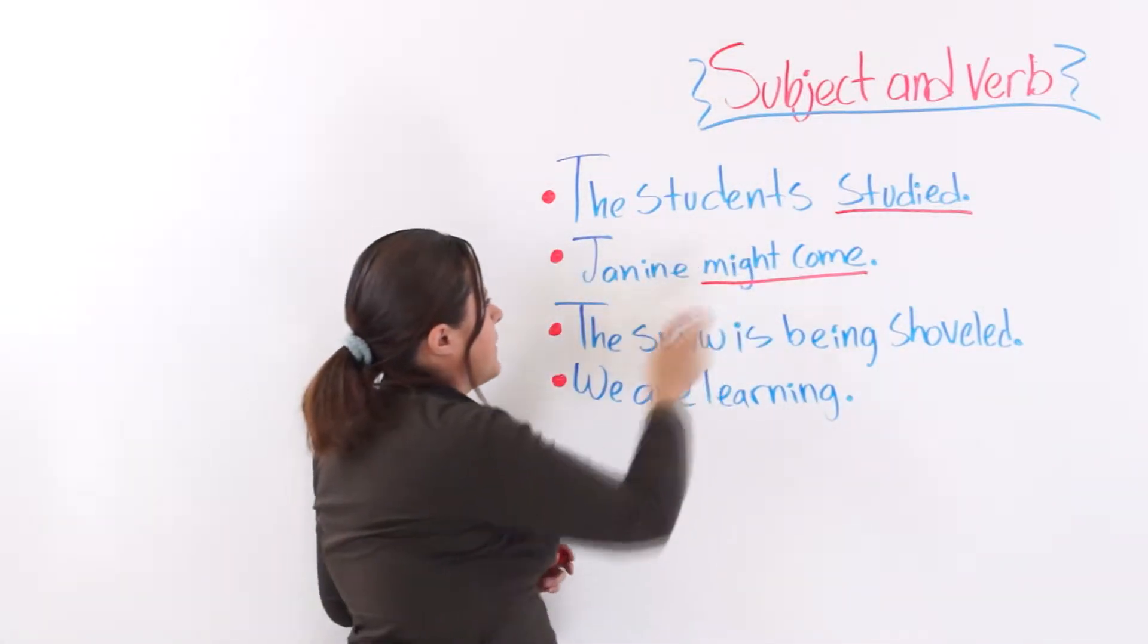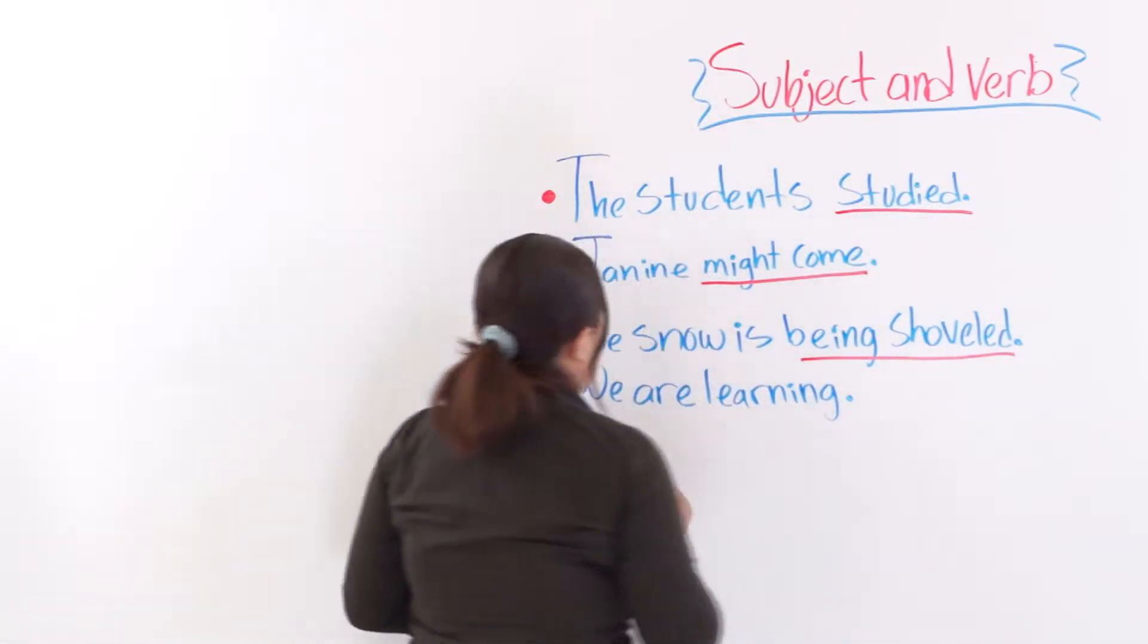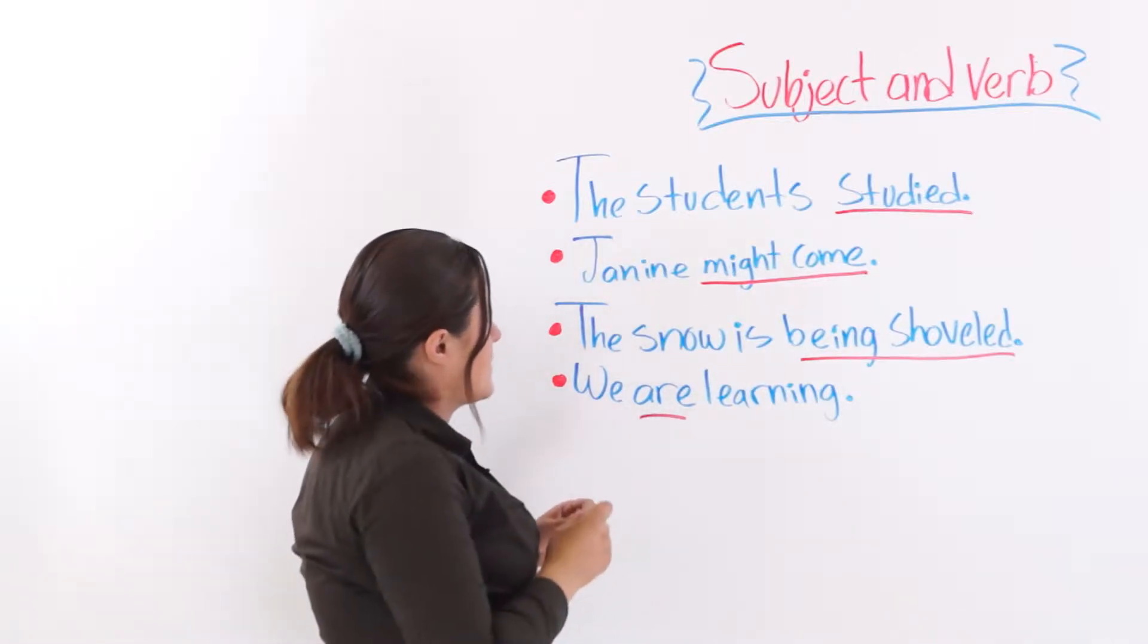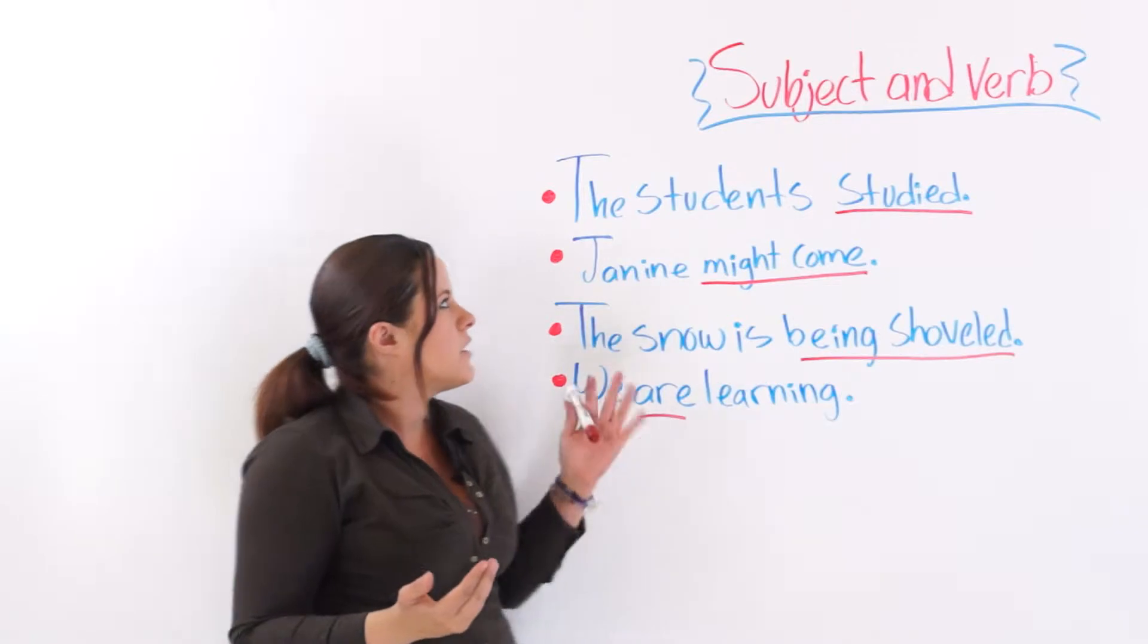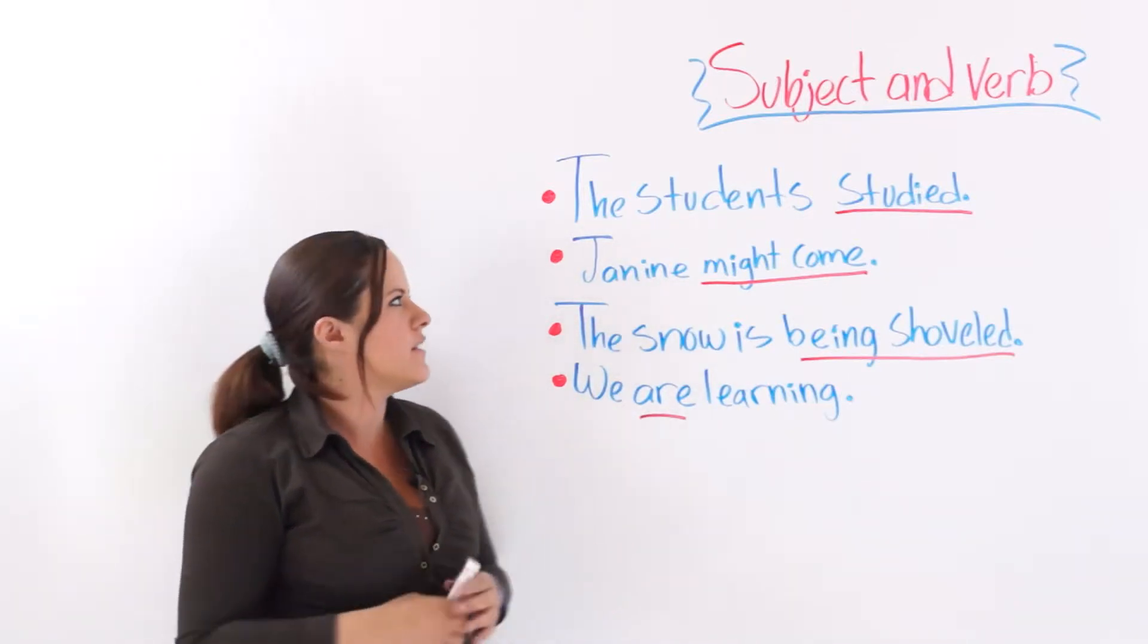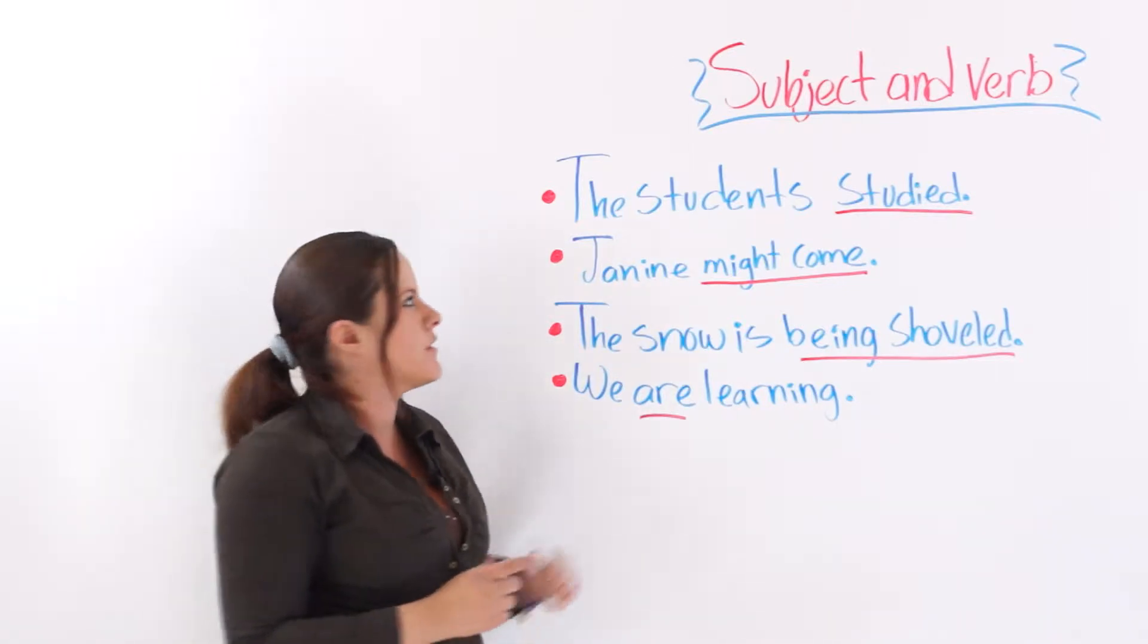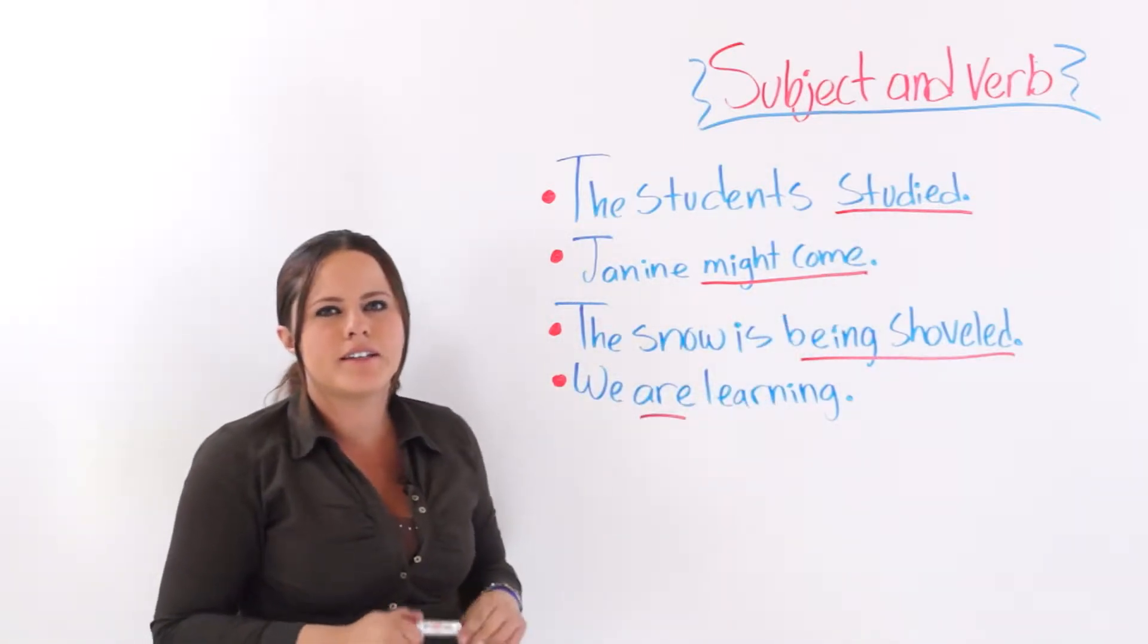This is a verb phrase, might come, being shoveled. This is a linking verb. Okay, so I am going to show you how a subject and a verb can make sense in a sentence by themselves. They don't need any more complements because, let alone, they create a perfectly coherent sentence.